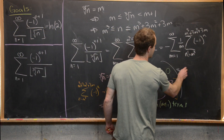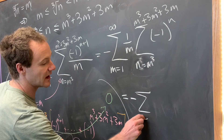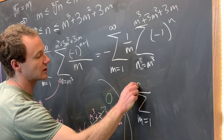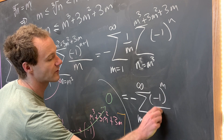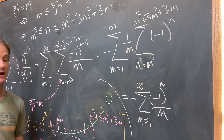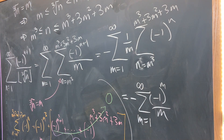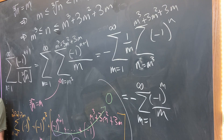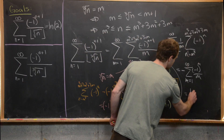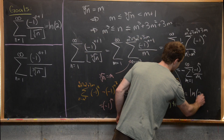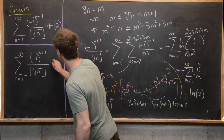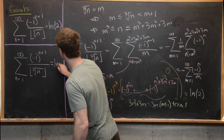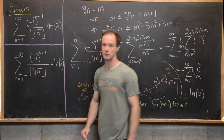That leaves us with minus the sum m equals 1 to infinity of minus 1 to the m over m — in other words, the same sum we ended with in the first case, which we showed equals ln(2). So the cube root sum also equals the natural log of 2.